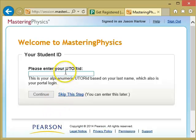The next question is, it should ask, please enter your UTOR ID. This is your alphanumeric UTOR ID based on your last name, which is also on your student card. So for me, that's HarlowJA. For you, it might have some numbers in it. So be careful to type that properly so that you get your marks.